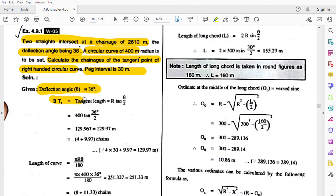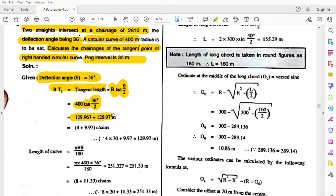So in elements of curve we discussed tangent length BT1. The formula is R tan(theta/2), so R radius of curve is 400 and tan(theta), given as 36, divide by 2. By calculation, the tangent length BT1 comes to 129.97 meters.